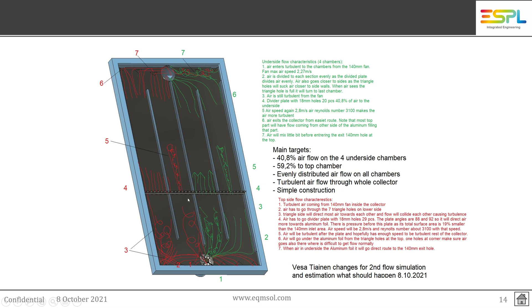Here when it hits the collector or the divider plate there, the air speed will increase to 2.8 meters per second based on surface areas, and Reynolds numbers would be 3,100 or something like that.